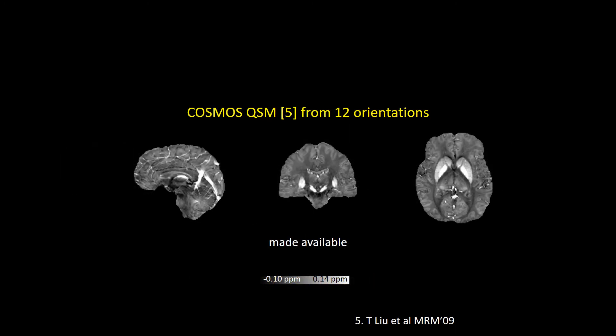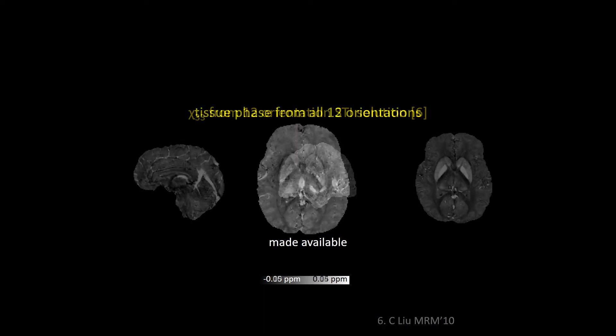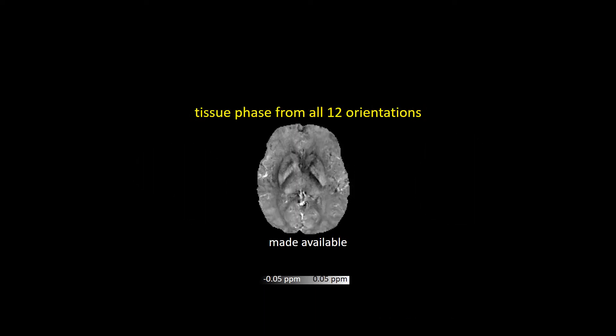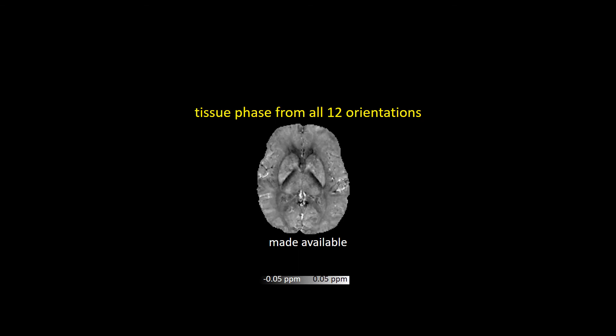For completeness, we provided the COSMOS solution from 12 head orientations, but for the ground-truth reference QSM, we actually employed the Chi-3-3 element of the STI solution. Finally, we released the tissue phase data from all 12 head orientations in case they are helpful in future studies.